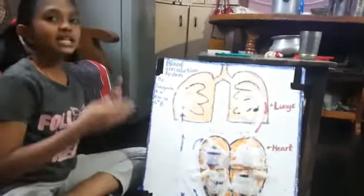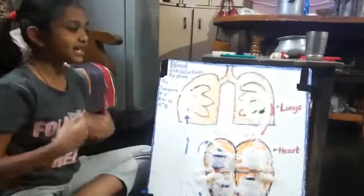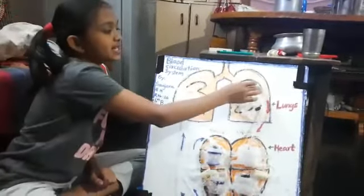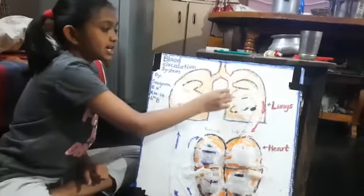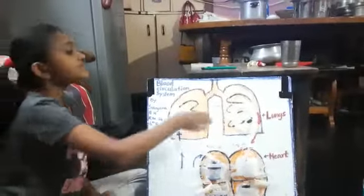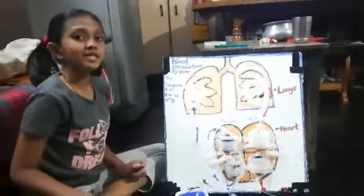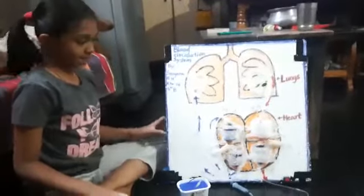When we inhale the air, oxygen in the finger-like structures present in our lungs transfer the oxygen into blood and the blood becomes red. It is called pure blood.